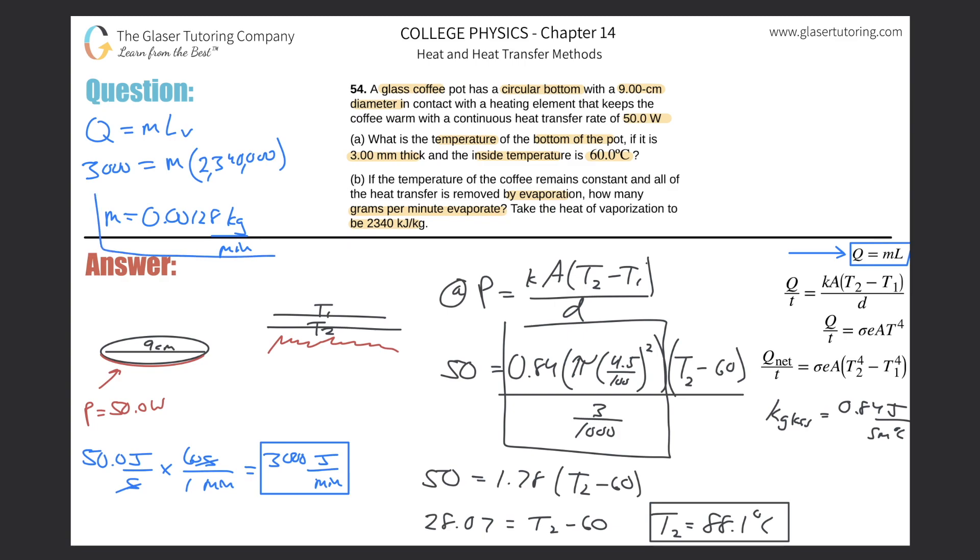And then they wanted us to find not the kilograms but the grams, so you've just got to move this decimal one, two, three places on over to the right, and it's going to be 1.28 grams per minute. That would be the final answer.